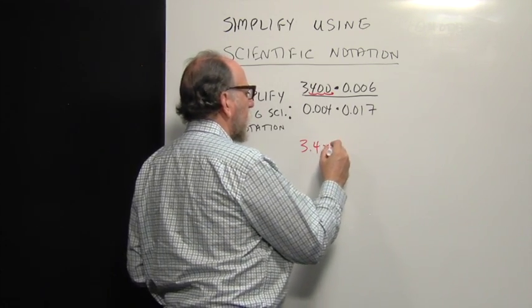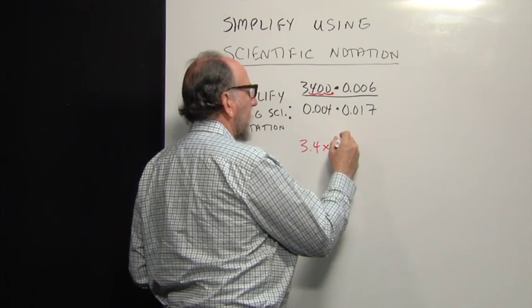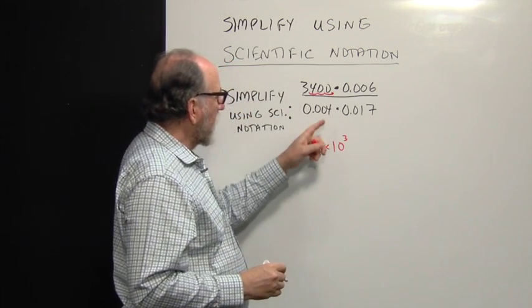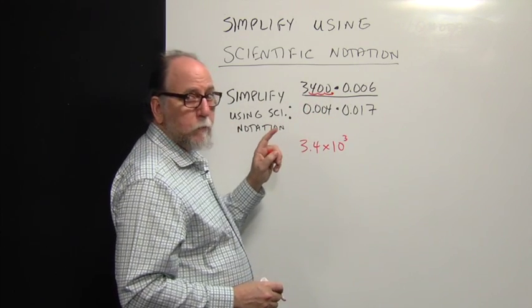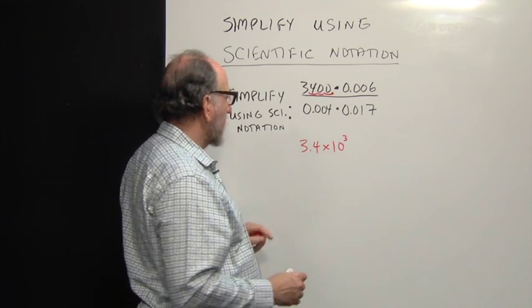And since I made that one smaller, I have to multiply by a bigger number. That is a positive exponent on 10. And that exponent is determined by the number of place values you move the decimal point. So that's the first one.